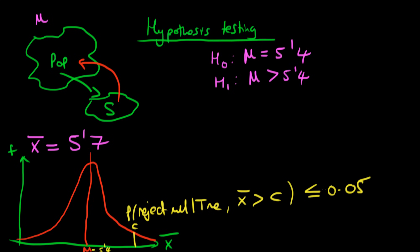The probability that we would have got a value of x-bar in this region, given that the null hypothesis was true, is really small. So it's likely that the null hypothesis itself is incorrect. This is an example of what we call a one-tailed test, because our critical region is just in one of the tails of the distribution.